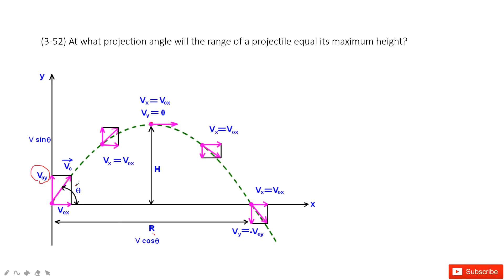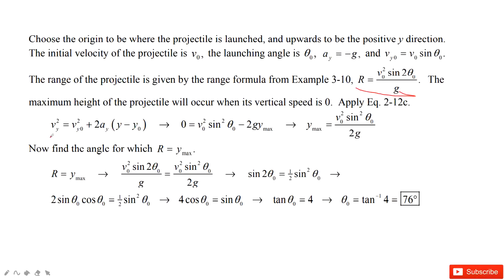This is v0 sin θ. At the peak, the velocity in the y-component becomes zero. Acceleration is negative g, pointing down. So in this way, we can easily find the height using this equation.